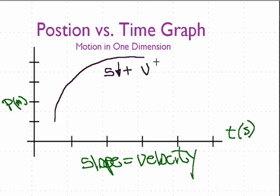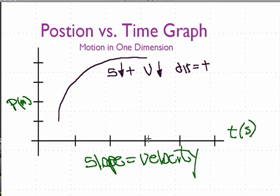What does that tell us about the velocity? Well, the velocity is decreasing and the velocity is positive, so therefore the direction that we're going is also positive. Now we can draw the other half of this curve. There's really only four of these that we can have, and this one we can draw as a continuation from this one right here.